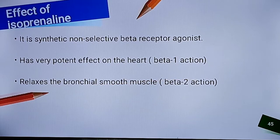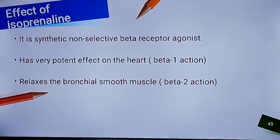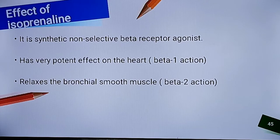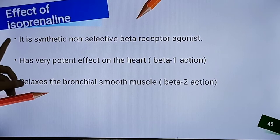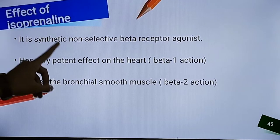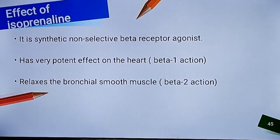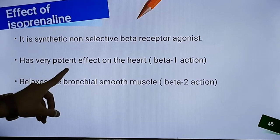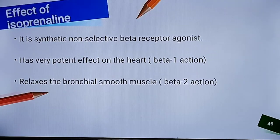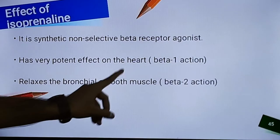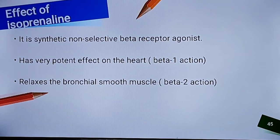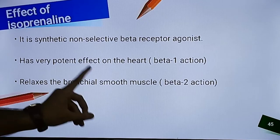Let us see the effect of isoprenaline, also known as isoproterenol. It is a synthetic non-selective beta-receptor agonist. By beta-1 action, it will have a very potent effect on our human heart. And by beta-2 action, it can relax our bronchial smooth muscle.